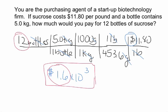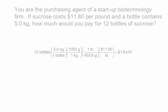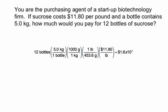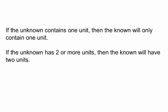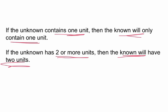This is another view of how a dimensional analysis problem looks and that's how you solve it. Previously, I stated that the known usually contains one unit. There are times when the known can have more than one unit. The key takeaway is: if the unknown contains one unit, the known will have one unit; but if the unknown has two or more units, the known will have two units. That is dimensional analysis.